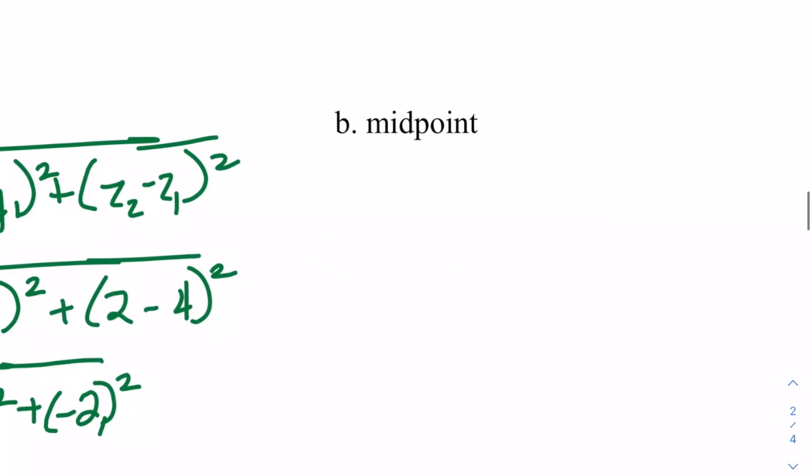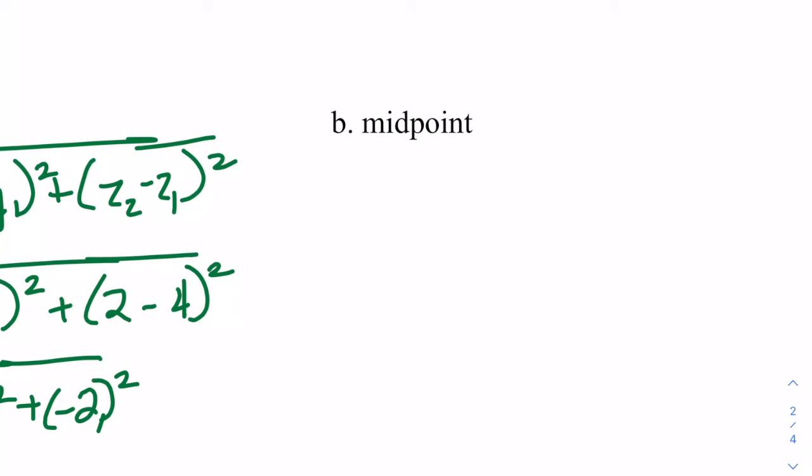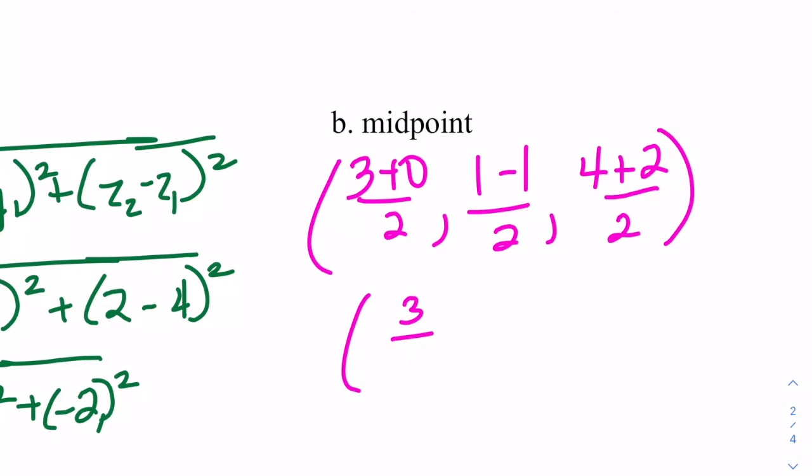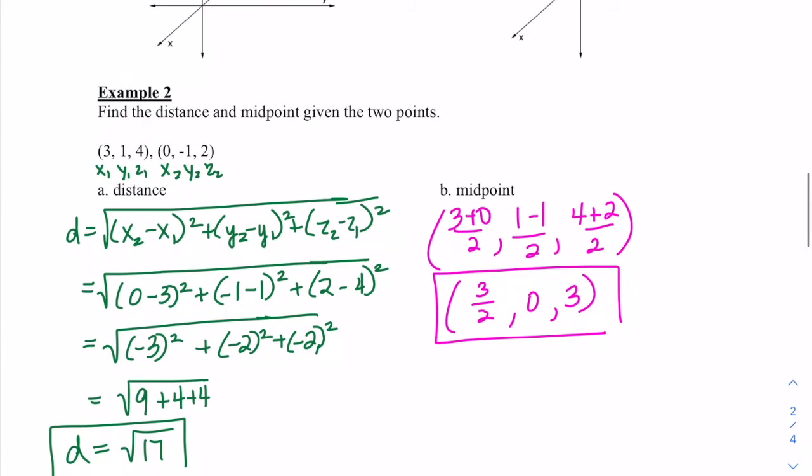For the midpoint, we're going to take those points and find the average of those values. So I'll have (3 plus 0) over 2, add the y, so y1 minus 2 over 2, and (4 plus 2) over 2. So we have 3 over 2, 0, and that'll be 6, so that'll be 3. We found the distance and the midpoint for those two given points.